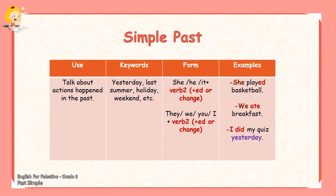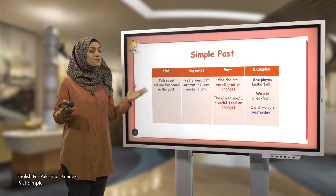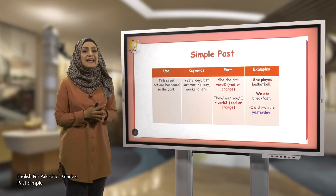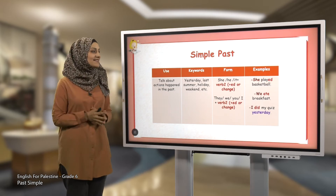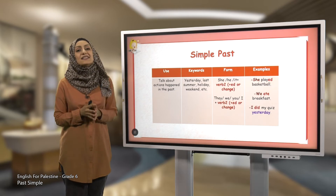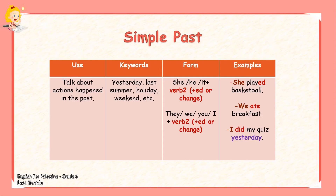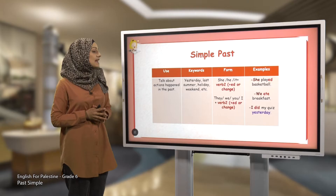If the verb is in the present and you want to change it to the past, all that you need to do is add E-D to most of the verbs. For example, 'play' becomes 'played.' She played basketball.